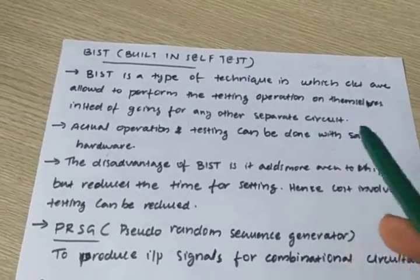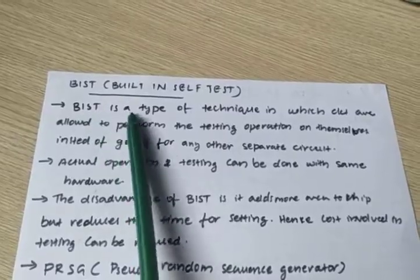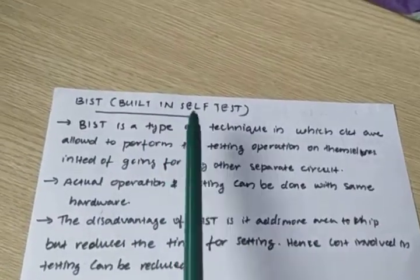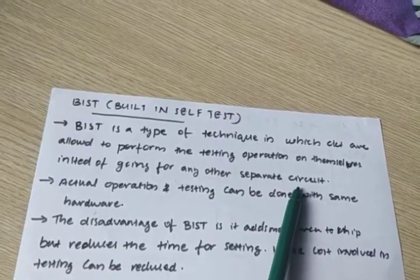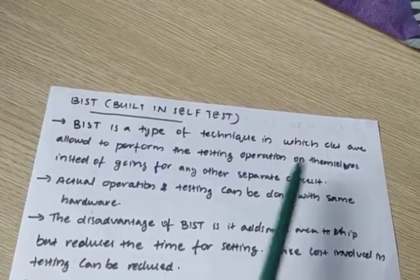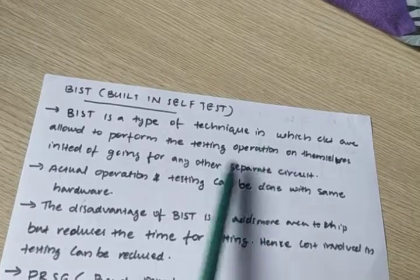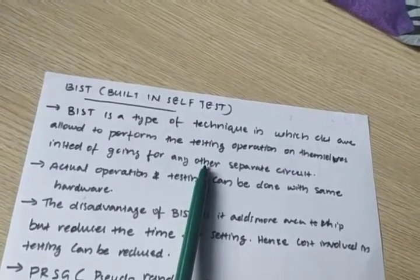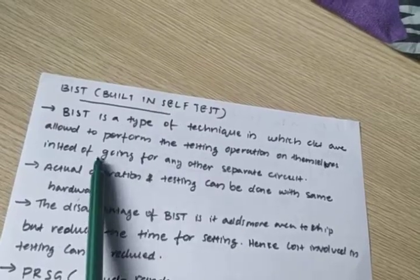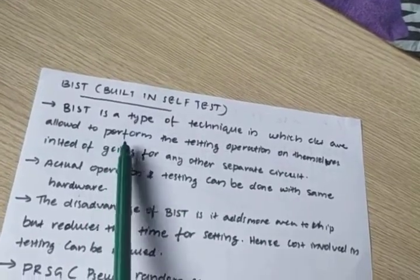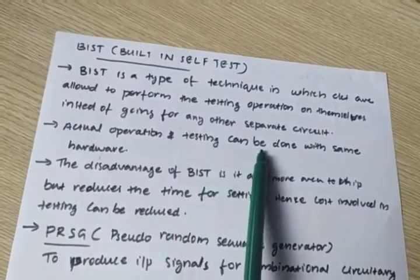In this lecture I'll discuss built-in self-test. BIST is a technique in which circuits are allowed to perform testing operations on themselves, instead of going to a separate circuit. That means testing is done within the IC, instead of going to an ATE. In ATE we use a separate circuit to generate test patterns and test the circuit. Here, circuits are allowed to perform testing operation themselves.